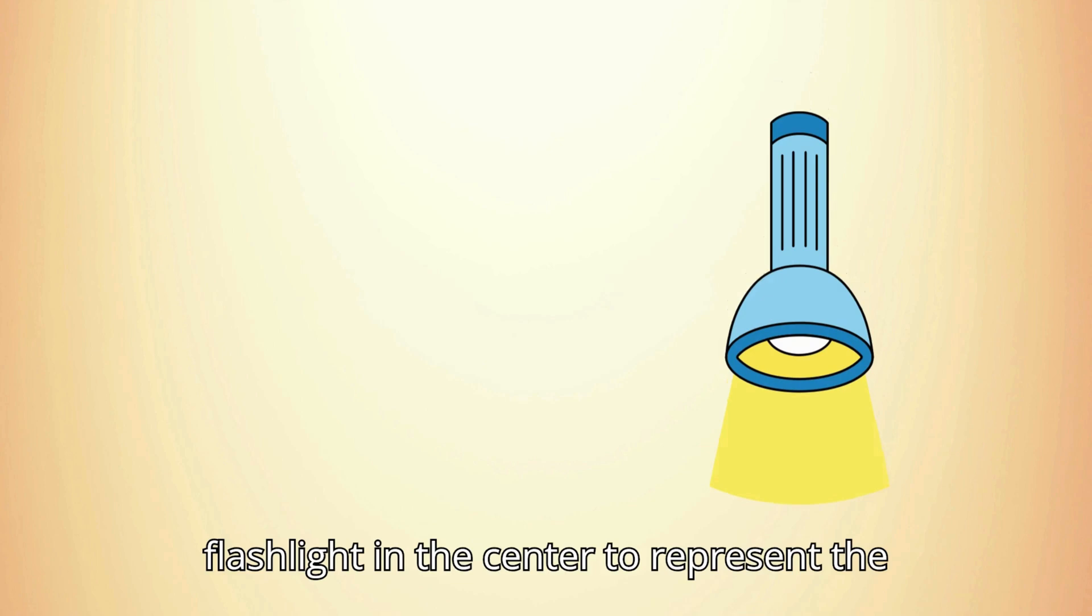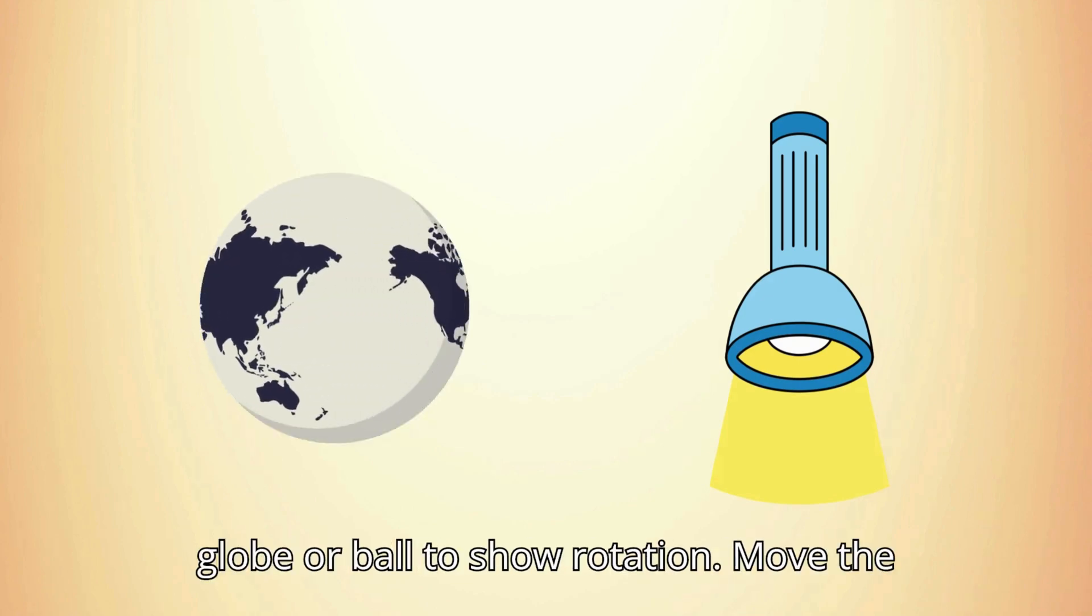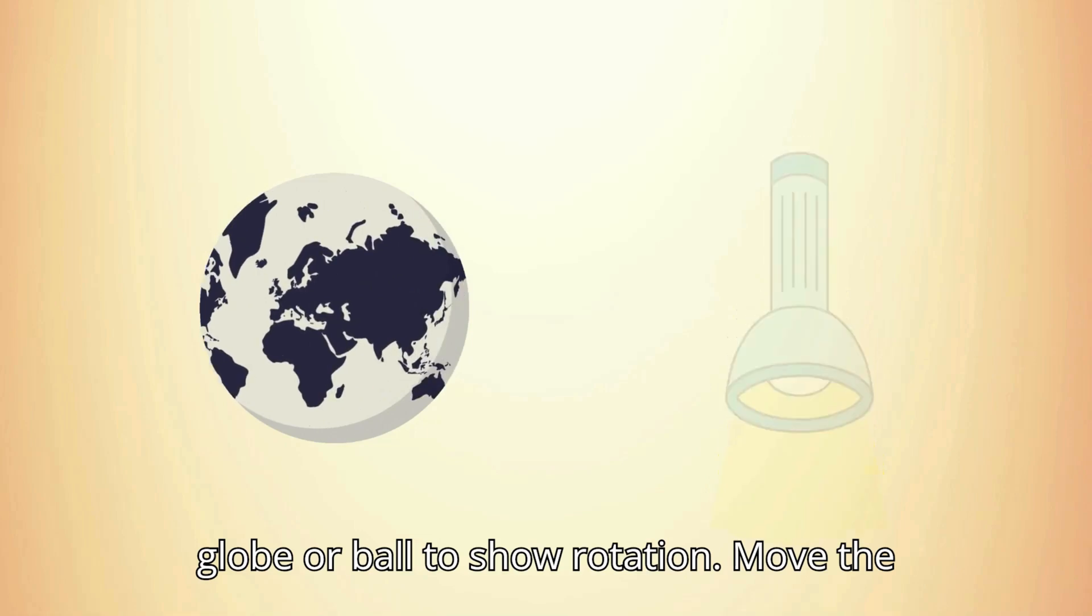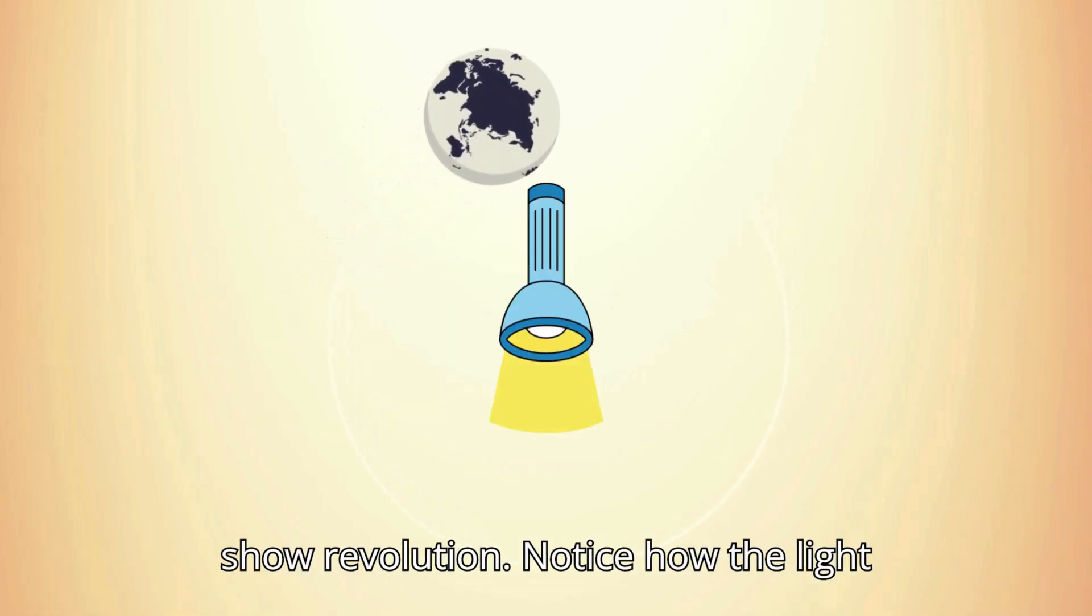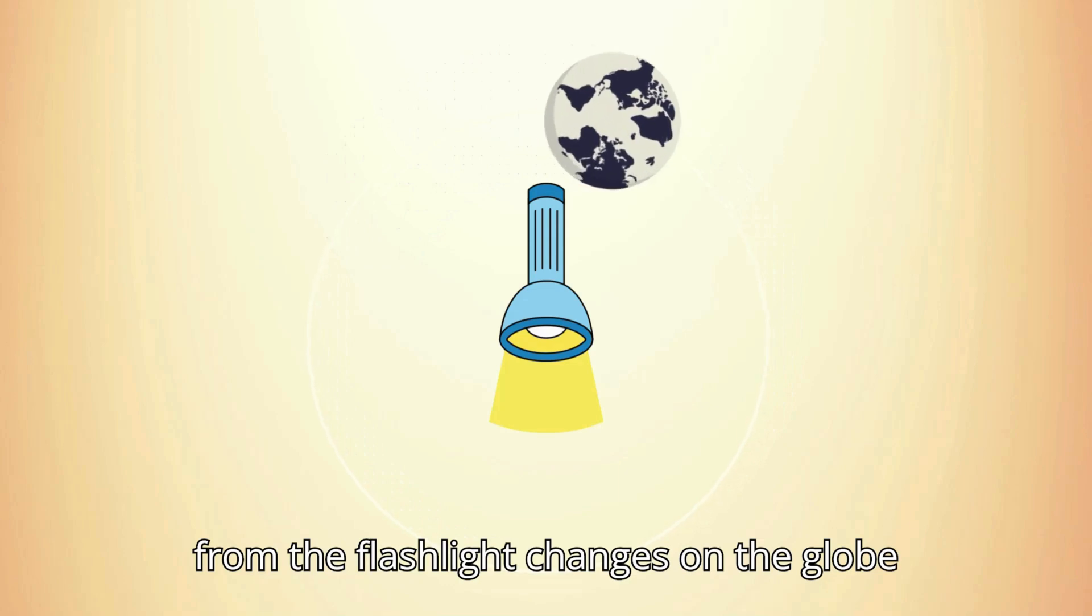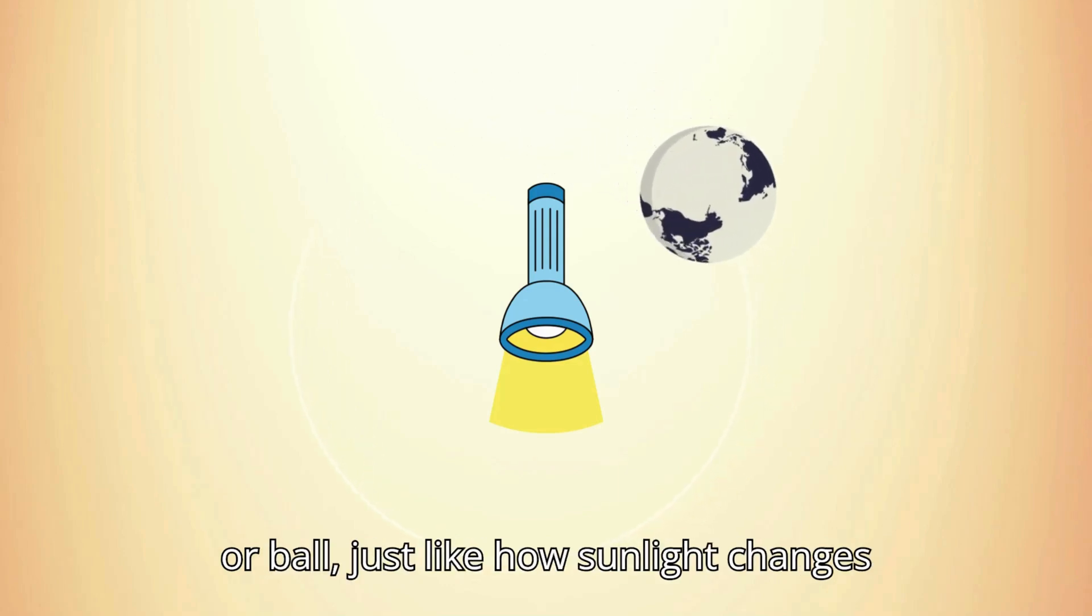Place the flashlight in the center to represent the sun. Then, slowly spin the globe or ball to show rotation. Move the globe or ball around the flashlight to show revolution. Notice how the light from the flashlight changes on the globe or ball, just like how sunlight changes on Earth.